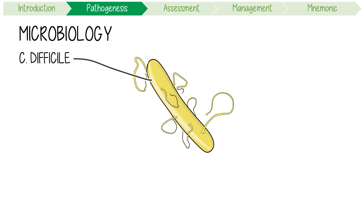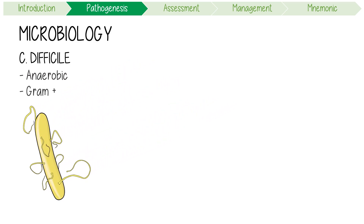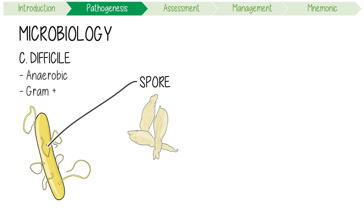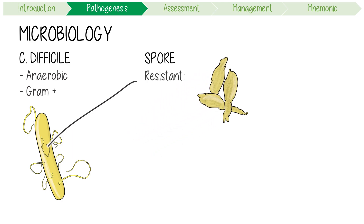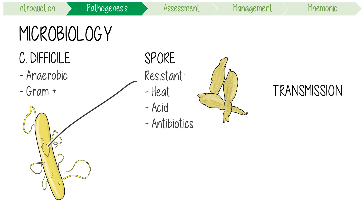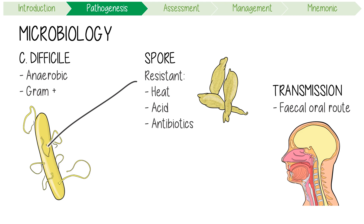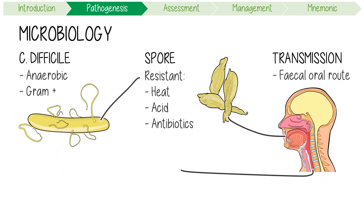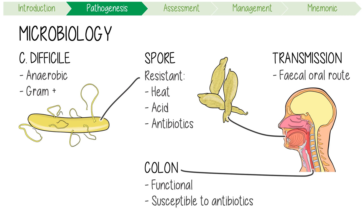C. diff is a bacteria which is anaerobic and gram-positive. Outside the colon, it survives in a spore form, which is resistant to heat, acid, and antibiotics. Infection is highly transmissible via the fecal-oral route by ingesting these spores. Inside the colon, the bacteria can convert into a functional, toxin-producing form, which is susceptible to antibiotics.